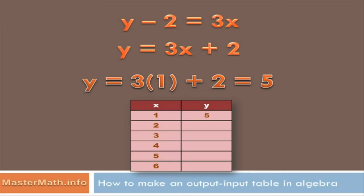So now I put a 5 under y and across from 1, and I go on and do 2. And then I do 3, and I do 4. And I do all the numbers on my x column and find out the corresponding y value. And I've completed my input-output table.